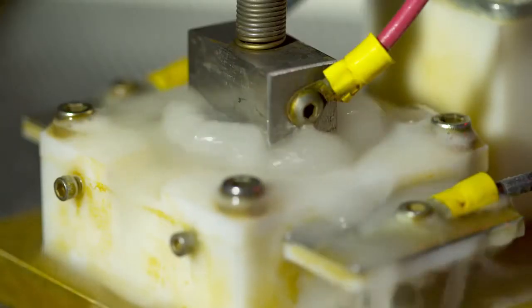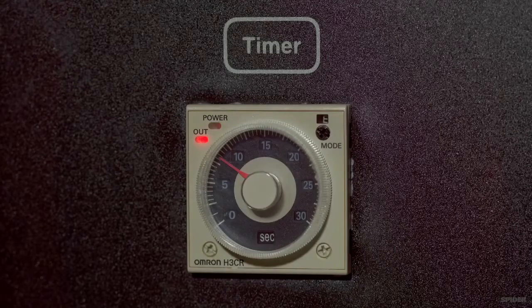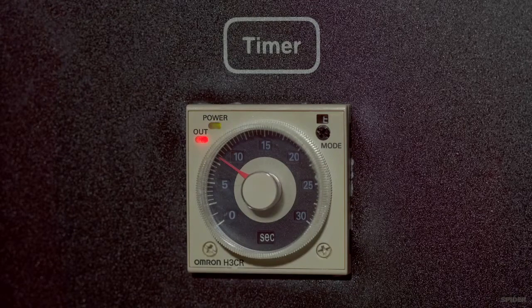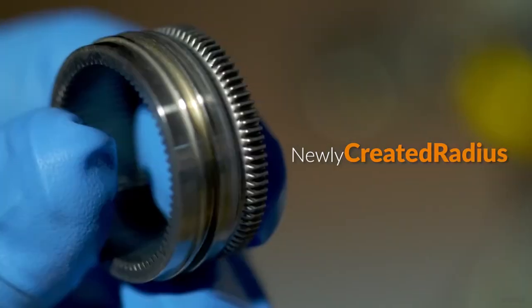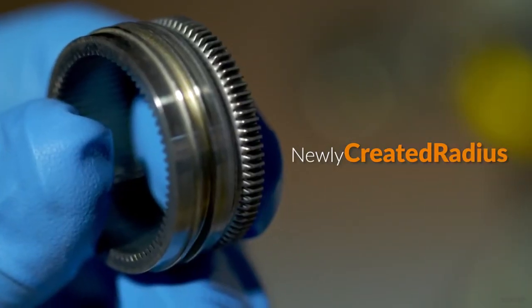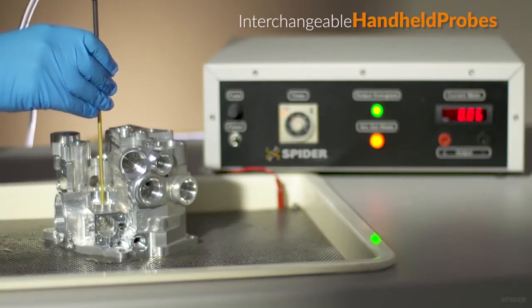Indicating the deburring work is in process. After a predetermined set time, it automatically shuts the ECD process off. Upon completion, you can see the newly created radius on the edge of the gear teeth.